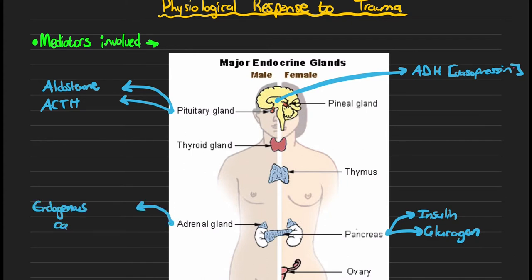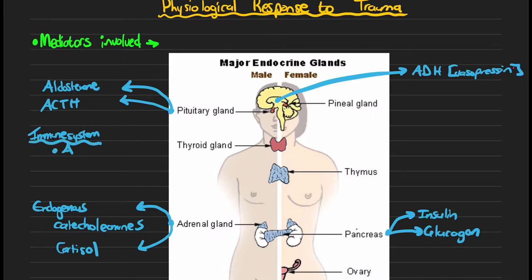In the adrenal gland we typically see the involvement of your cortisol and endogenous catecholamines. If we look at the immune system, we typically see the involvement of activated complements as well as multiple inflammatory mediators like TNF-alpha and cytokines. And finally, we see the involvement of activated platelets and leukocytes.